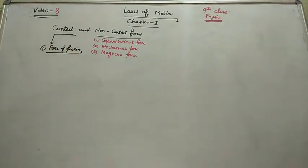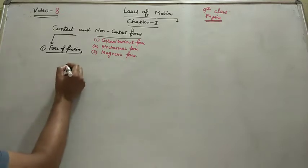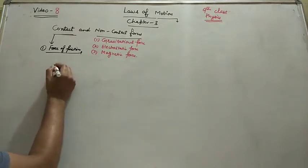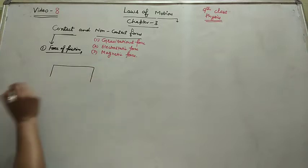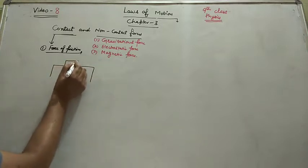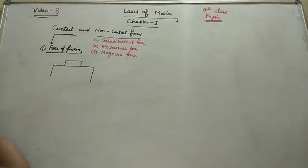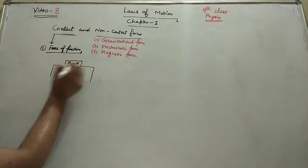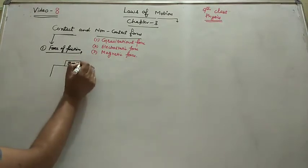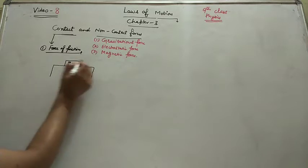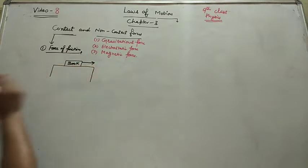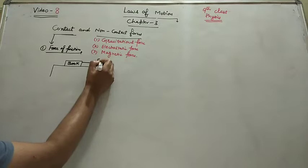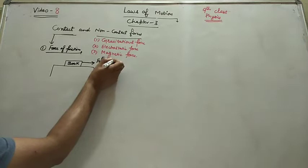Now friction force is a self-adjusting force. Suppose this is a table top, and here is one book lying on the top surface of the table. If I push it or pull it in this way, this is the external force, applied force.